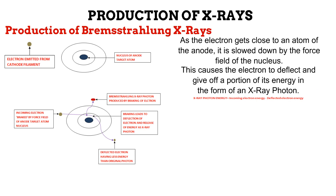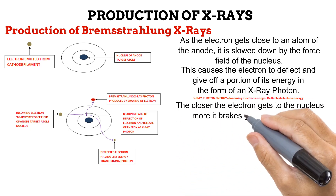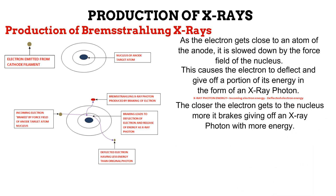Pause the video and take a minute to look at the diagram while going over the explanation we just gave — this will help you understand it better. Take note that the closer the electron gets to the nucleus and its force field, the greater the energy of the X-ray photon it gives off. The electron can either pass at a distance from the nucleus and produce a photon with low energy, or pass close to the nucleus and produce a photon with higher energy, or it can even get absorbed completely by the nucleus, in which case all of the electron's energy will be converted to an X-ray photon, producing a photon with very high energy.